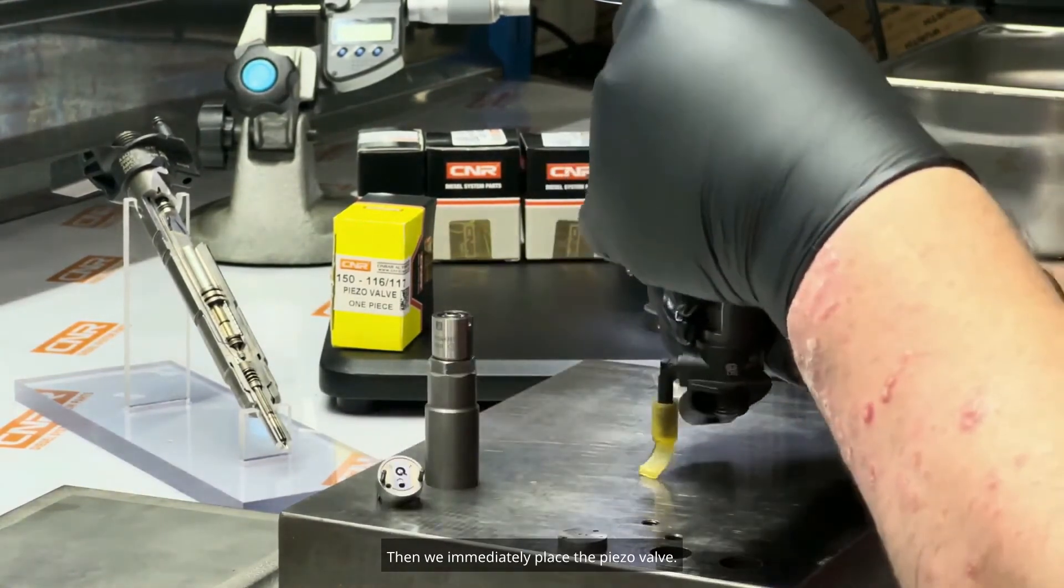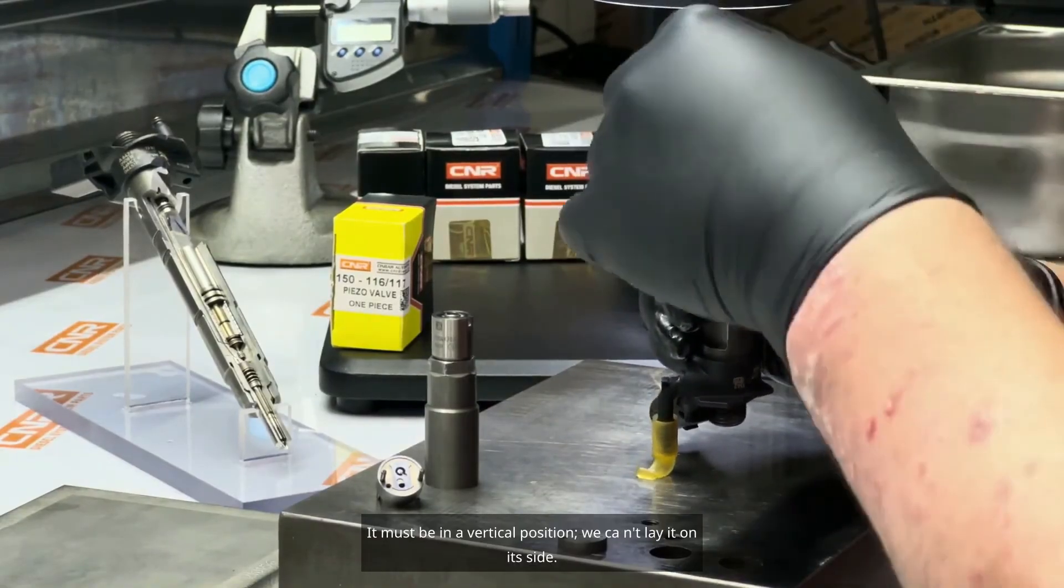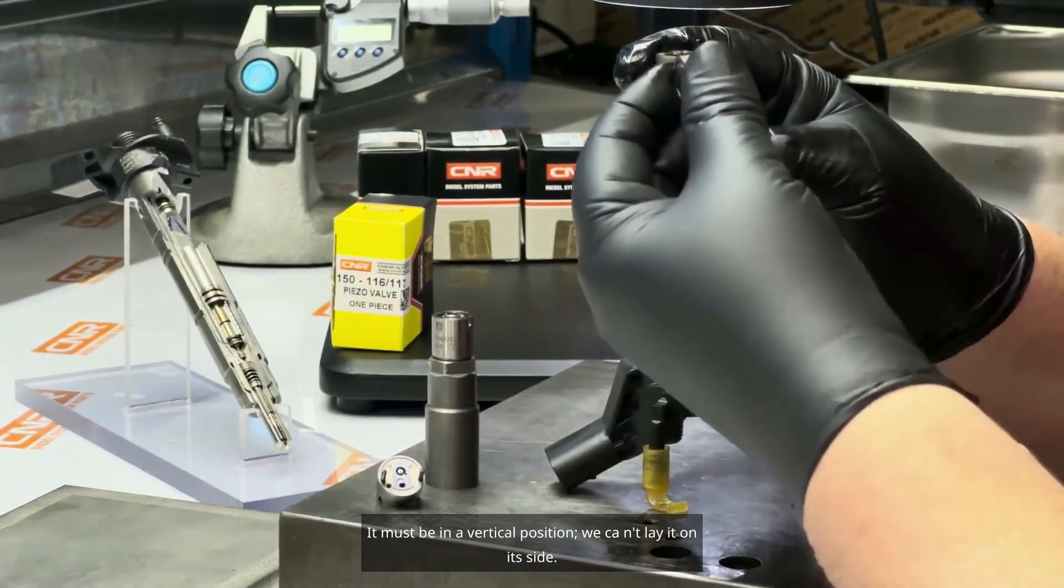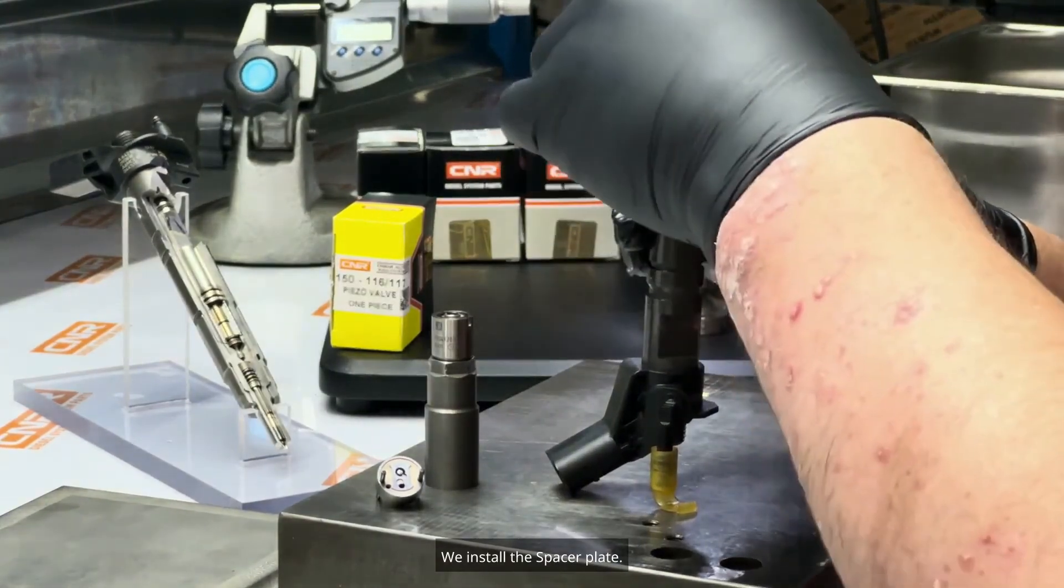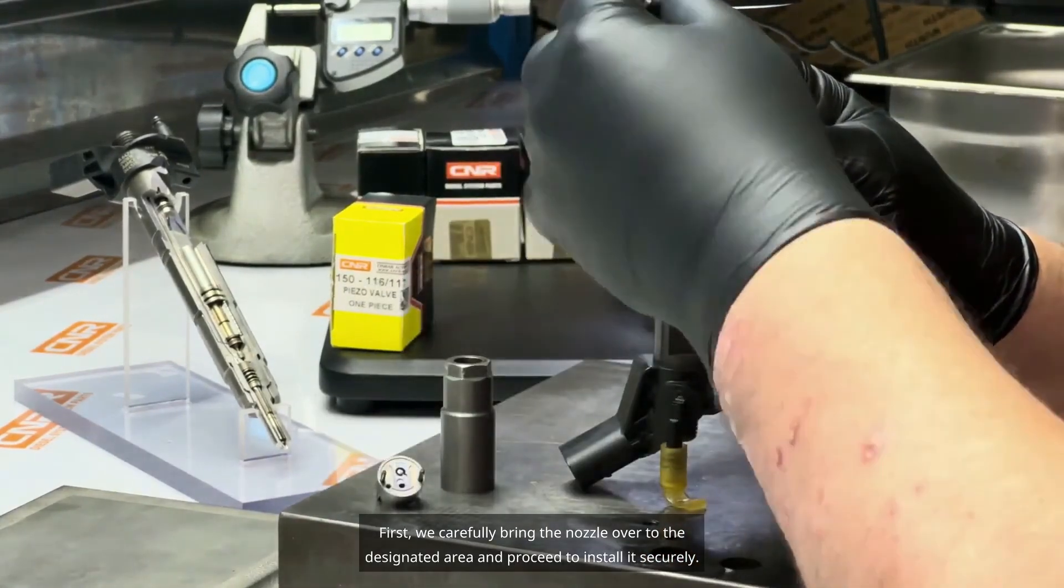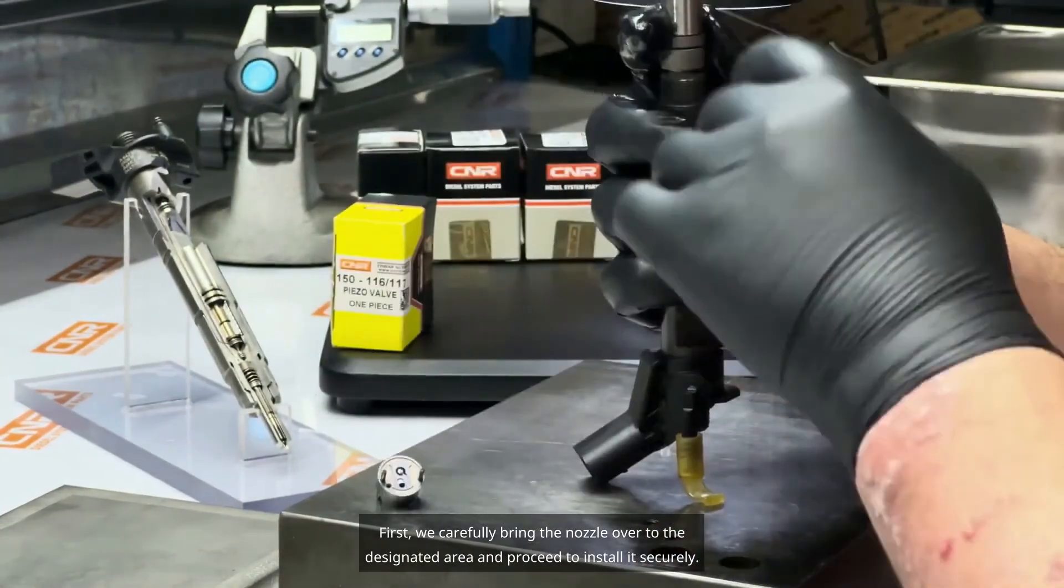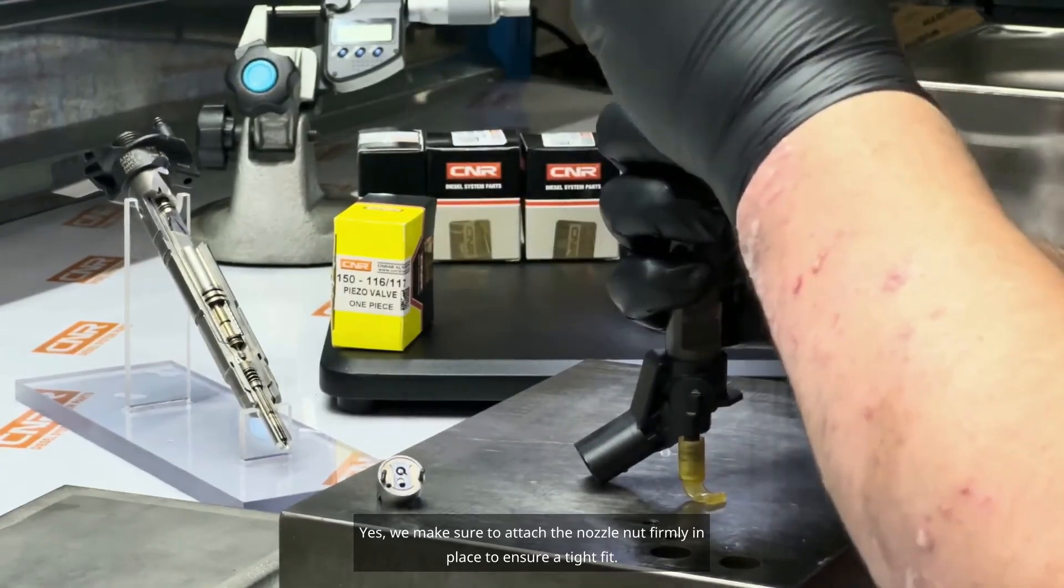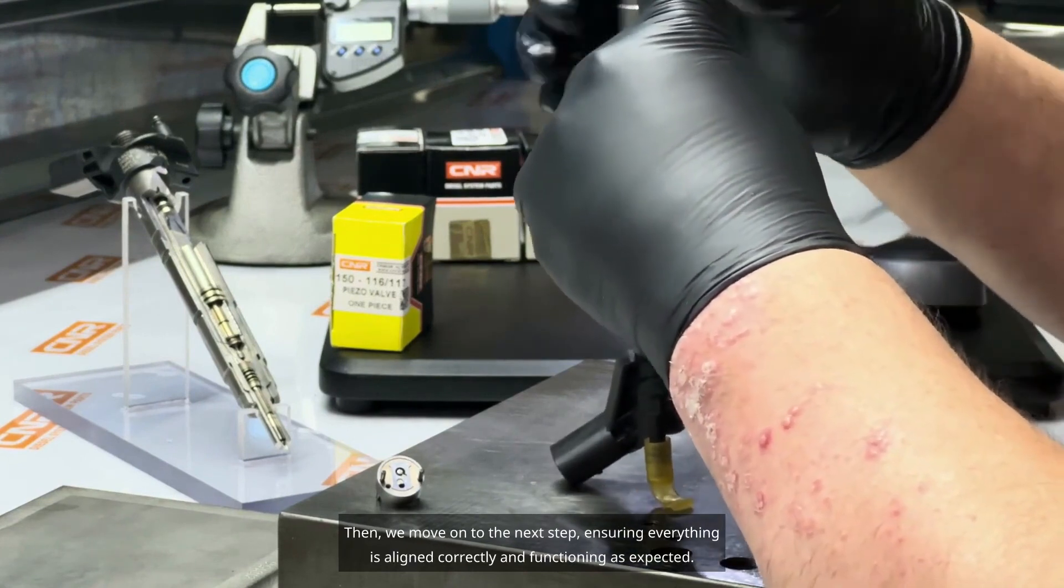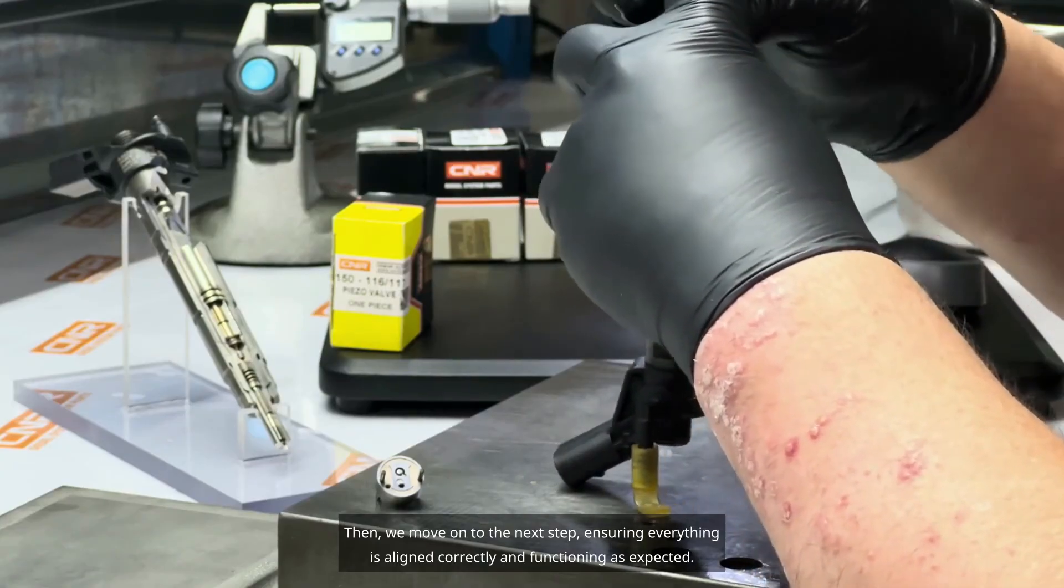Then, we immediately place the piezo valve. It must be in a vertical position. We can't lay it on its side. We install the spacer plate. After that, we carefully bring the nozzle over to the designated area and proceed to install it securely. We make sure to attach the nozzle nut firmly in place to ensure a tight fit. Then, we move on to the next step, ensuring everything is aligned correctly and functioning as expected.